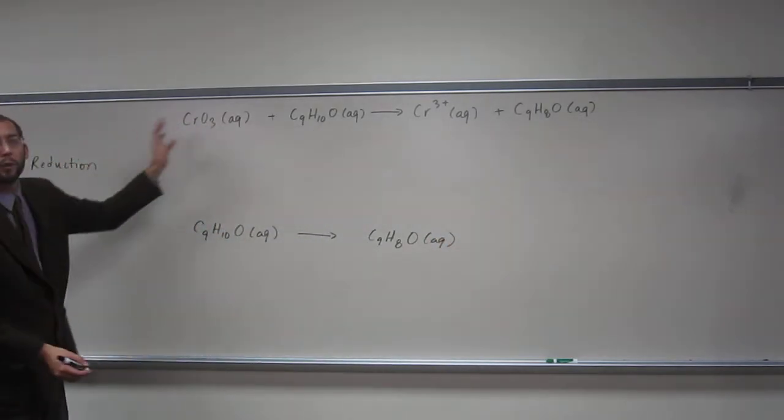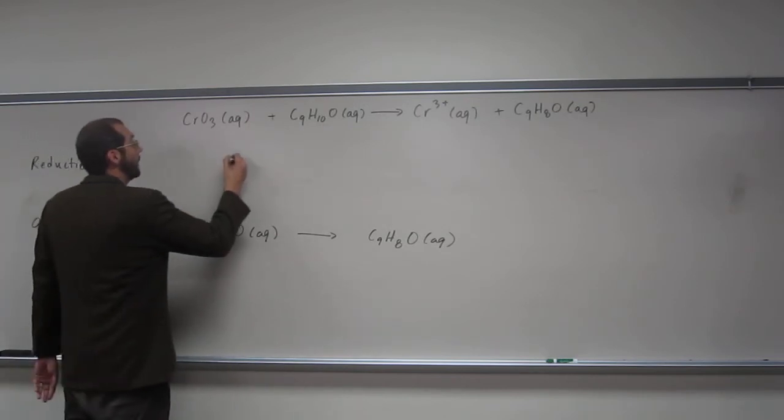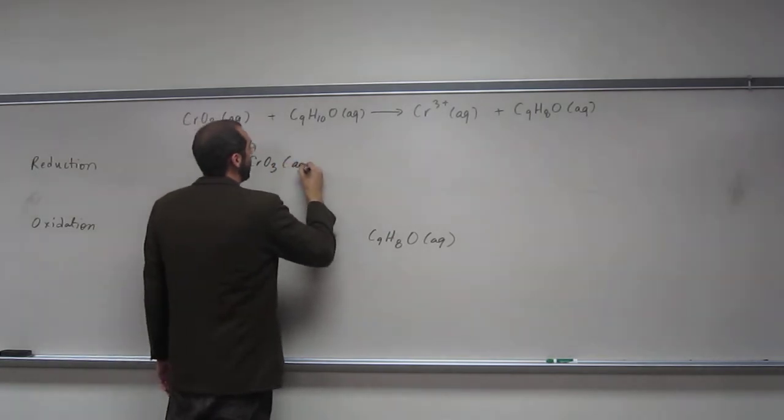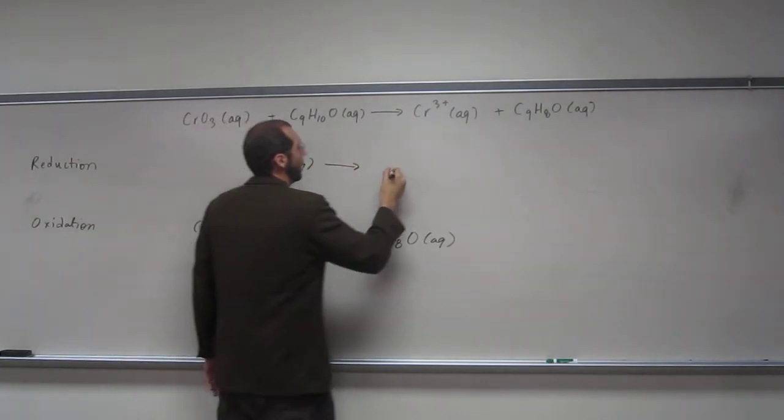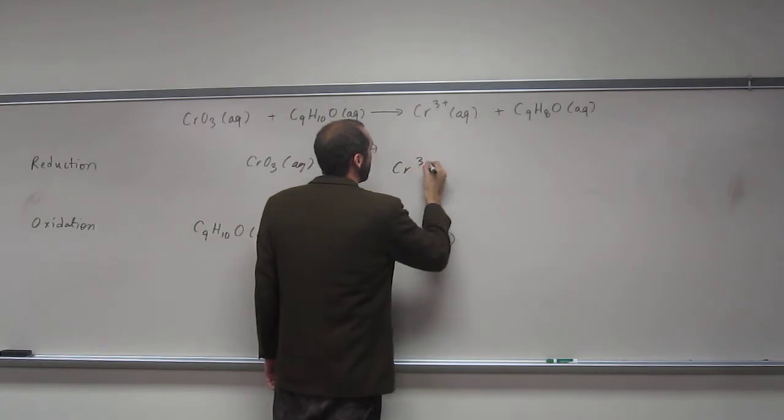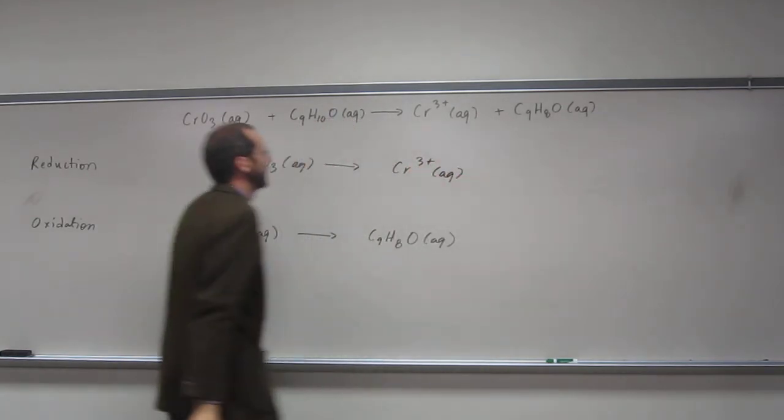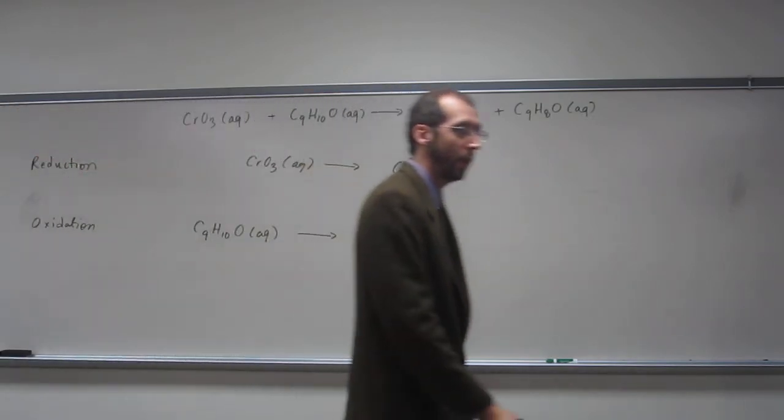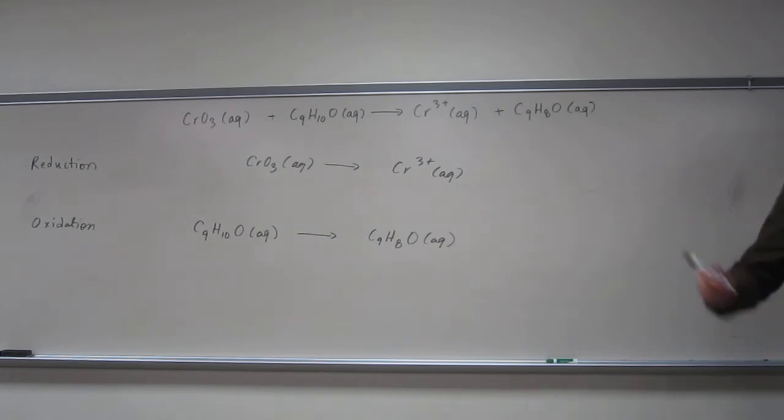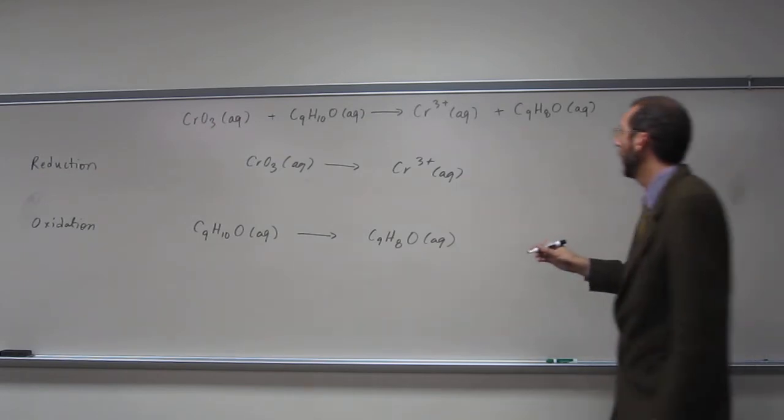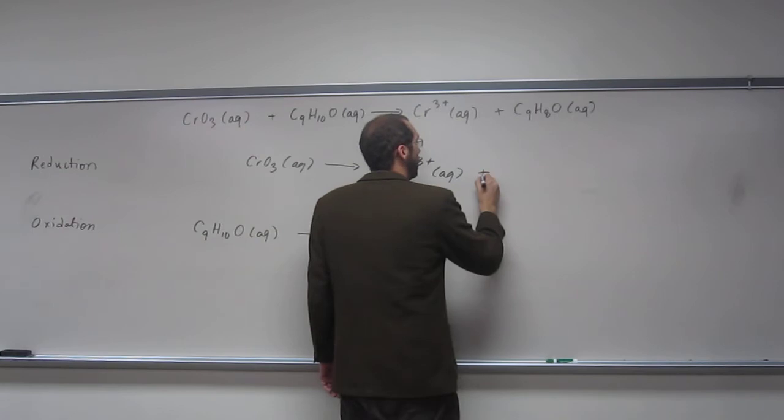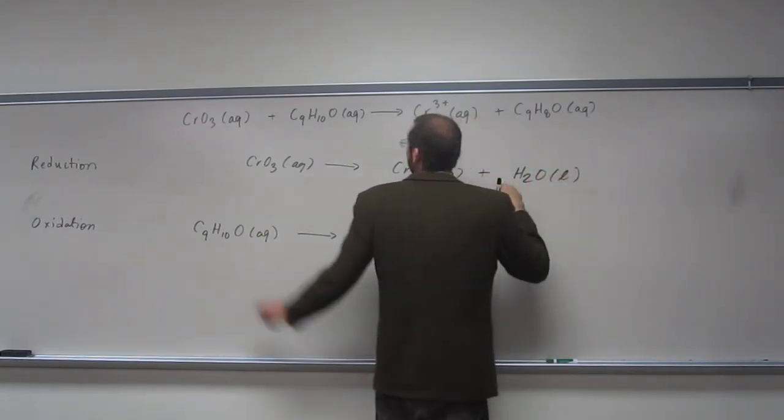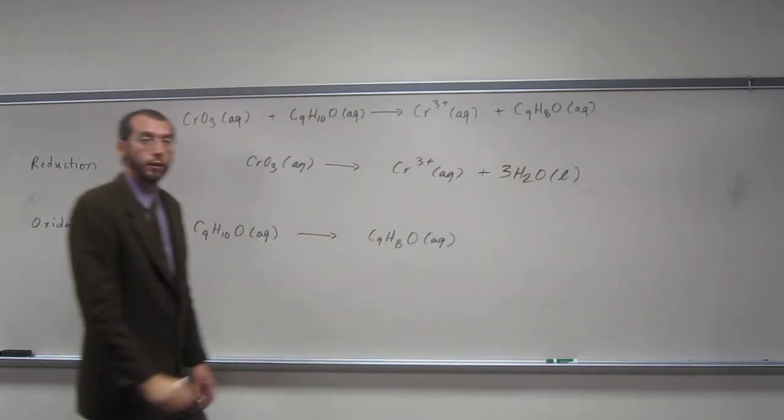The other portion is the reduction. We've got CrO3 to Cr3+. Remember, in balancing redox reactions in acidic solutions, whenever we have extra oxygens, we put them as water. Since we've got three oxygens, we put three waters there.